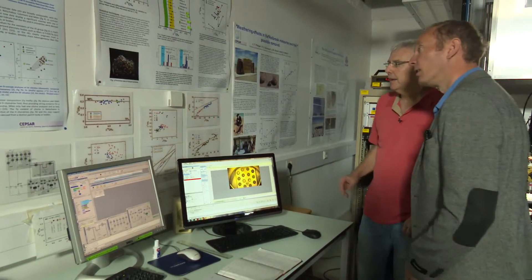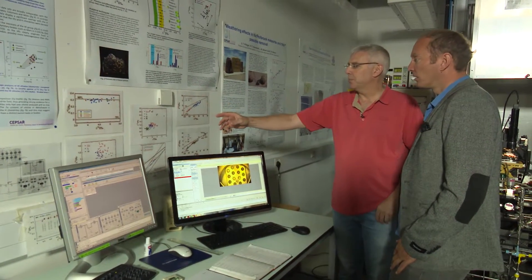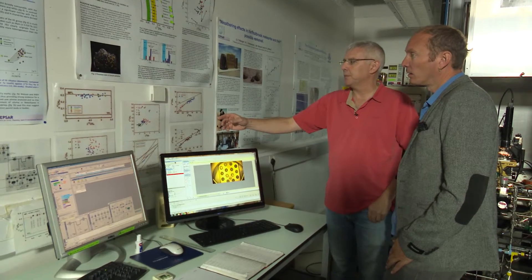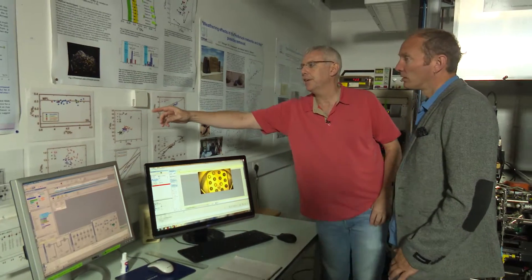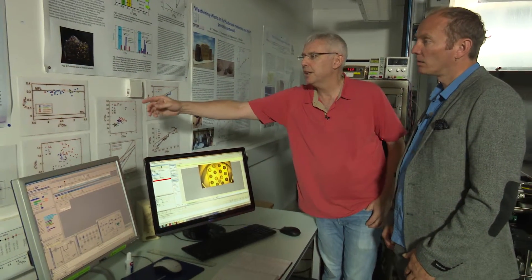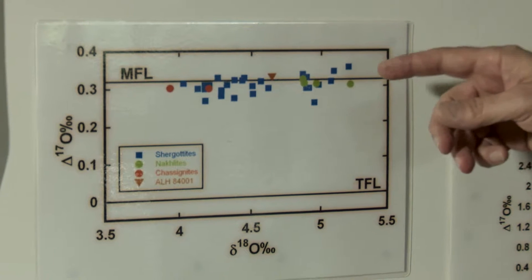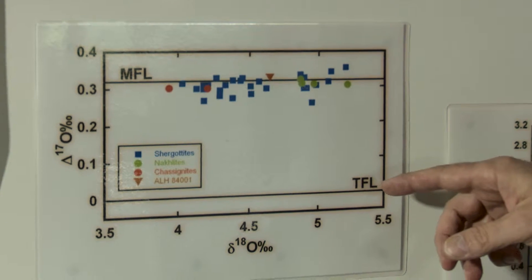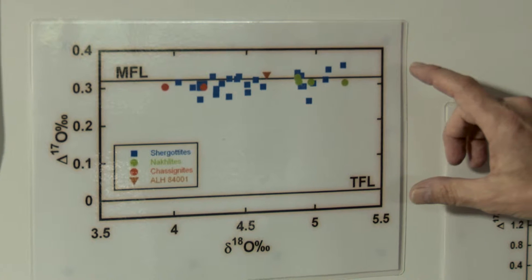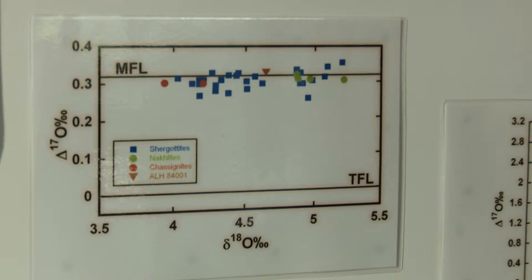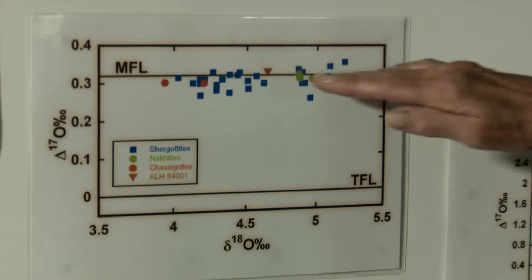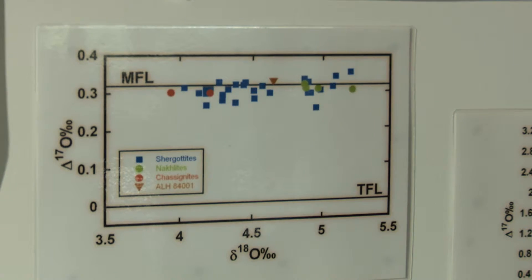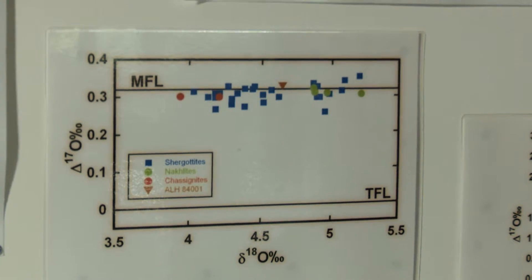Well can you show me some examples of some of the data? Here are some plots of the types of results we get from our instrument. This is a classic one showing the difference between Mars and Earth. We've measured lots of different Martian meteorites. And we can measure quite distinctly the very small difference between the Martian fractionation line and the terrestrial fractionation line. What sort of difference is that? That's 0.3 per mil. And so you can see the incredible reproducibility we get on a set of samples that allows us to define the Martian fractionation line to about plus or minus less than 10 ppm.